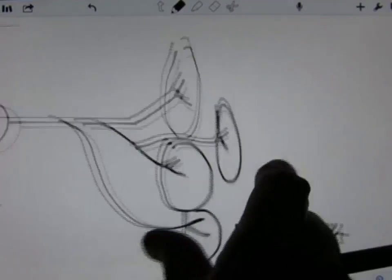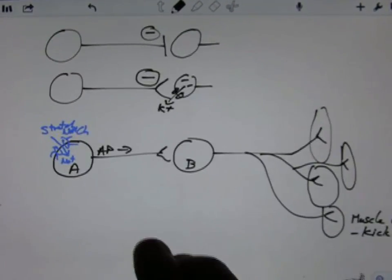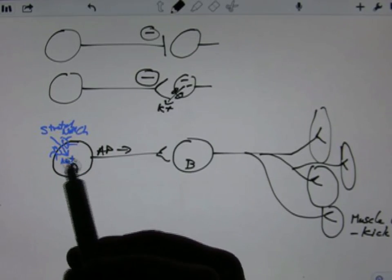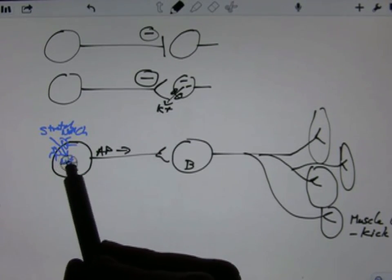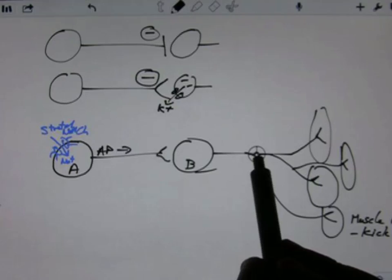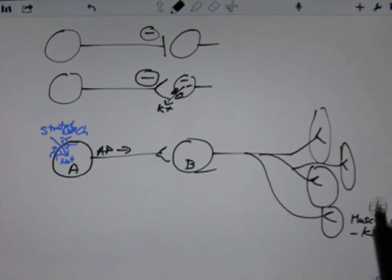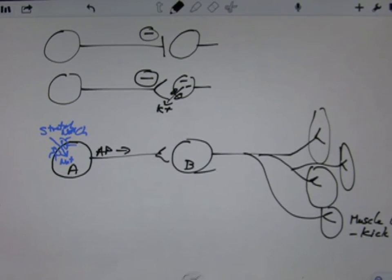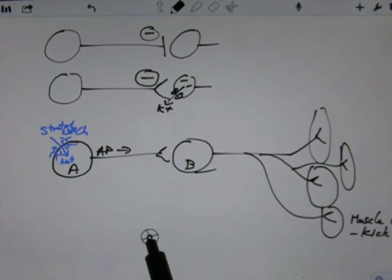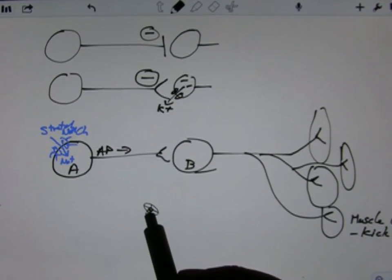So this is a simple reflex that you have going from your patellar tendon, just beneath your patellar tendon, through a sensory neuron to motor neurons in your spine that go out to the muscle in your leg that contracts along the top of your thigh, contracts to pull up on the end of your leg and kick. So pull up on the patella and kick your leg.